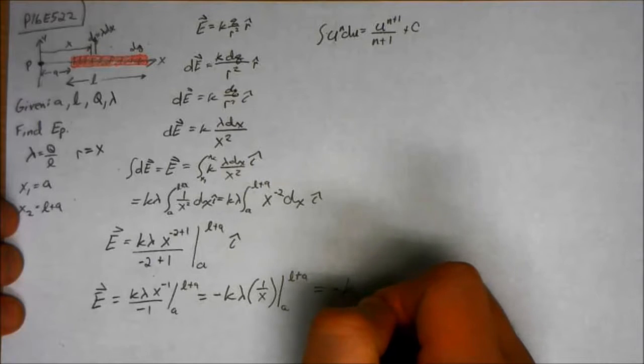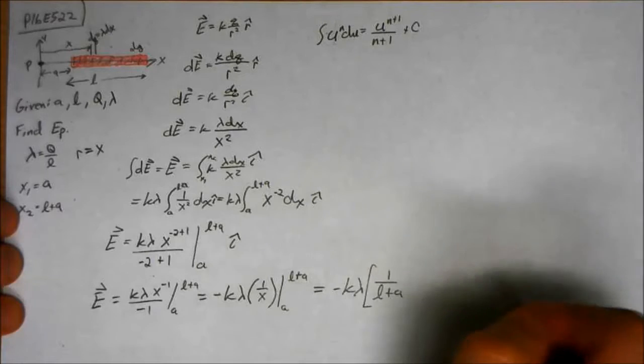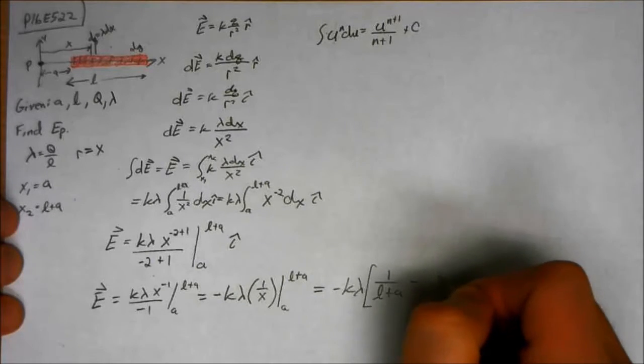So if I keep going, it's negative K lambda 1 over L plus A minus 1 over A.